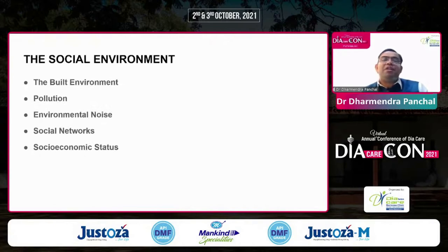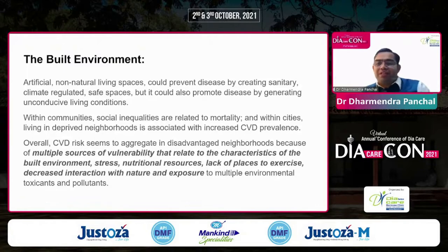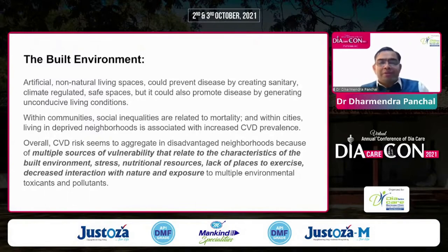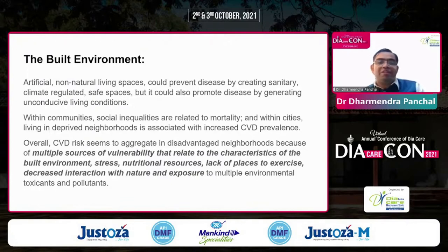Regarding the social environment — including built environment, pollution, environmental noise, social networks, and socioeconomic status: artificial non-natural living spaces may help prevent disease by creating sanitary conditions, climate regulation, and safe spaces, but may also promote disease by generating unconducive living conditions. Multiple sources of vulnerability related to built environment characteristics include stress, lack of nutritional resources, lack of exercise spaces, decreased interaction with nature, and exposure to multiple environmental toxins — all contributing to increased cardiovascular disease prevalence within communities.